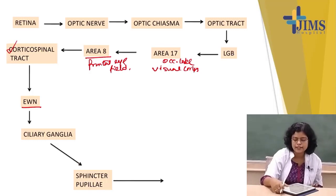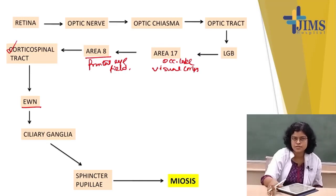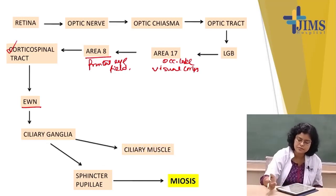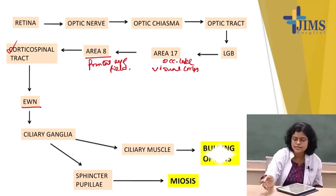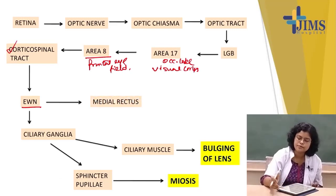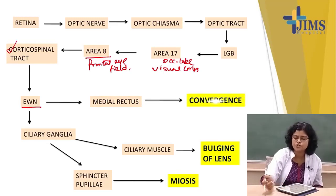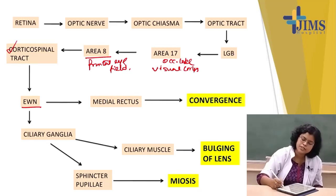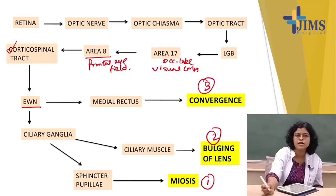Another output from the ciliary ganglia supplies the ciliary muscles, and ciliary muscle contraction leads to bulging of the lens. Lastly, contraction of the medial rectus leads to convergence. So these three — miosis, lens bulging, and convergence — all happen in accommodation reflex. This is the total pathway for accommodation reflex.